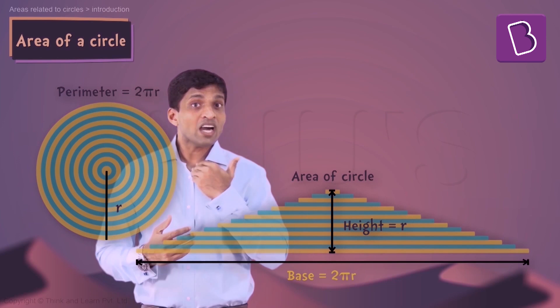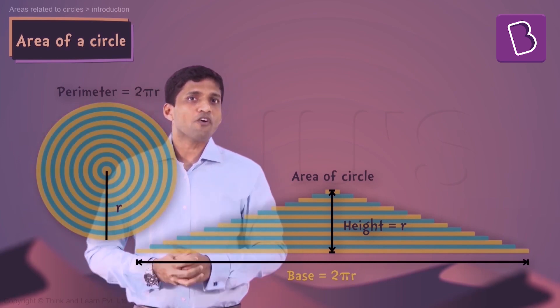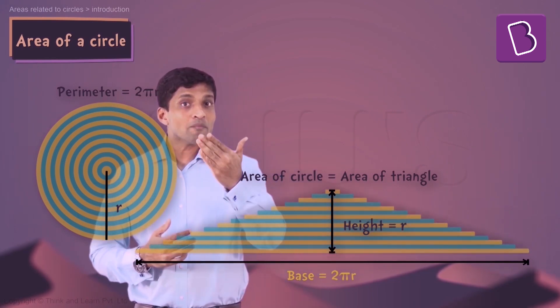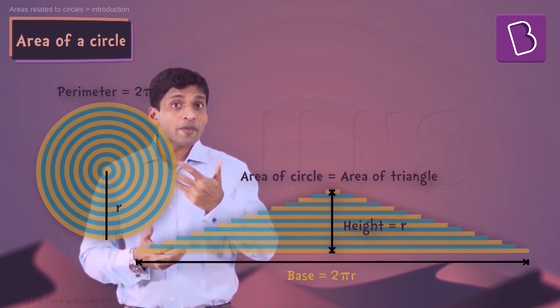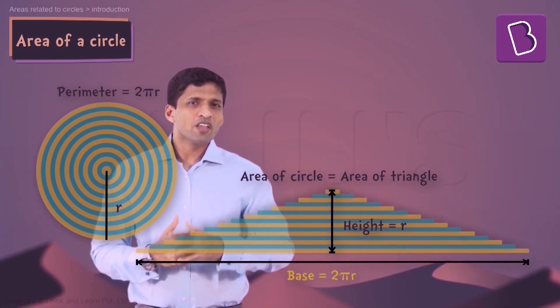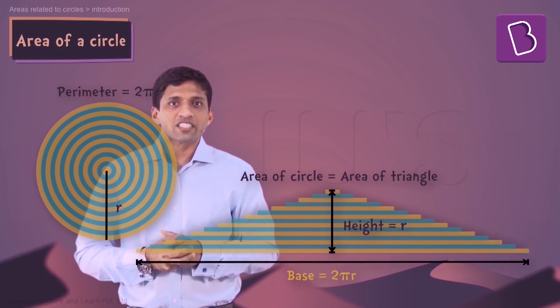So area of the circle, which is very easy for all of you to understand, is nothing but area of this particular triangle. I am helping you visualize area of a circle using area of a triangle. An interesting connect, right?